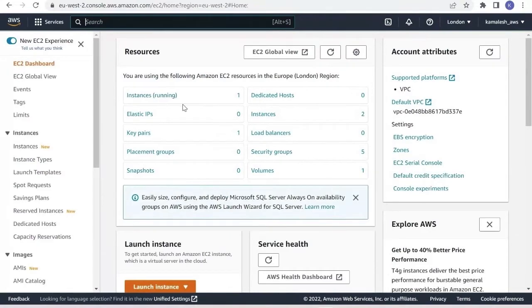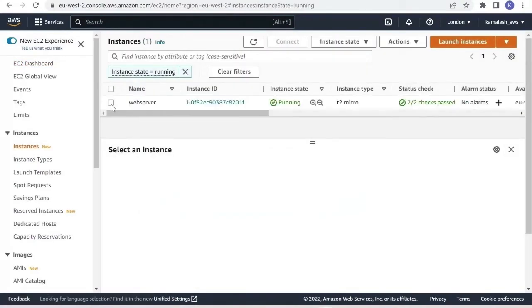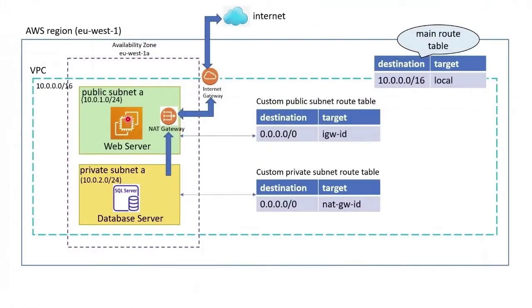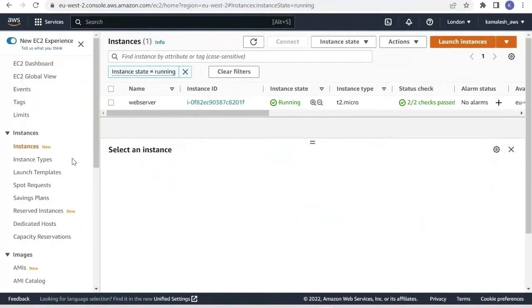We are in the management console. We go to EC2 — here we have one EC2 instance running which is our web server. This web server is already set up and running; you can watch my previous video where I created this VPC, public subnet, web server, and route table. Now in this video we are going to create the private subnet. First, let us create a subnet.